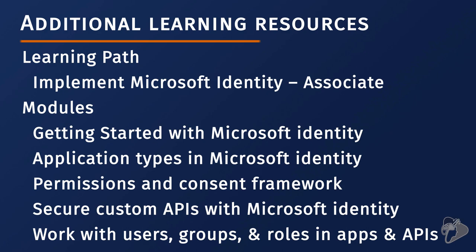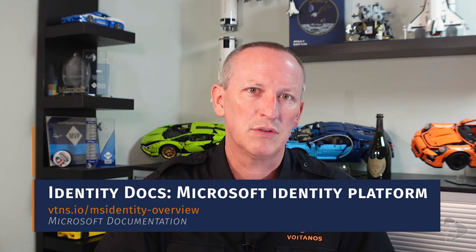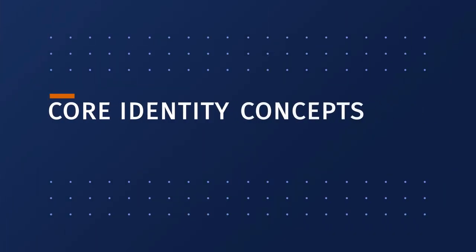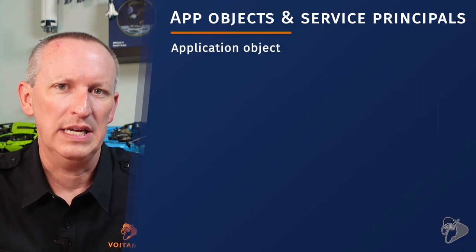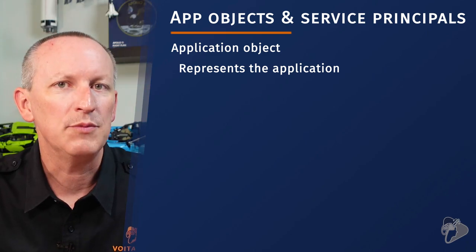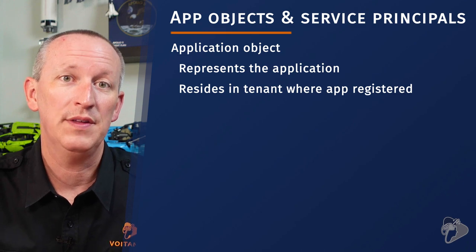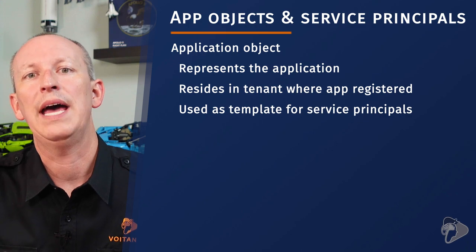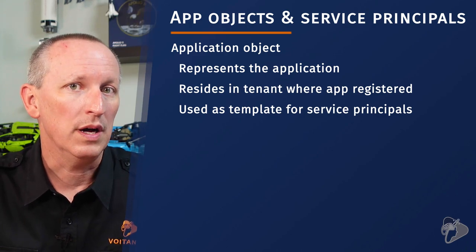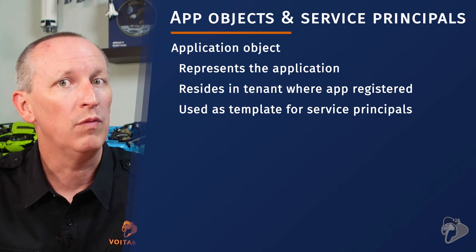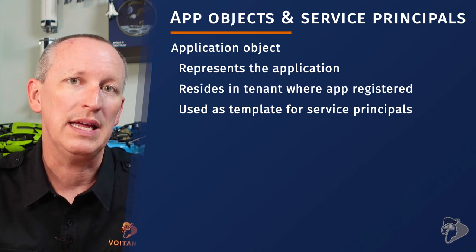In this lesson, we're going to tackle some of the core identity topics. You need to know the difference and the relationships between the application object and the service principal. When you create an application in Azure AD, you're creating an application object. This object resides within the Azure AD tenant where the application was registered — also known as the application's home tenant. The application object is used as a template to create service principals, and it describes three aspects of an application: how it can issue tokens to access the application, resources the application might need to access, and actions the application can take. The application object is the global representation of your application for use across all tenants.